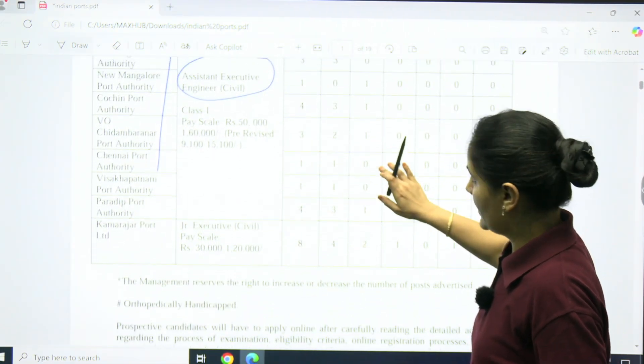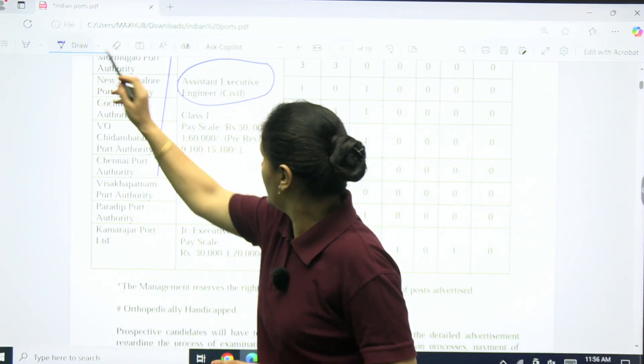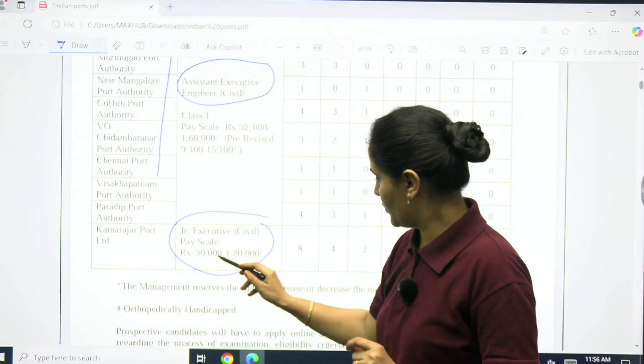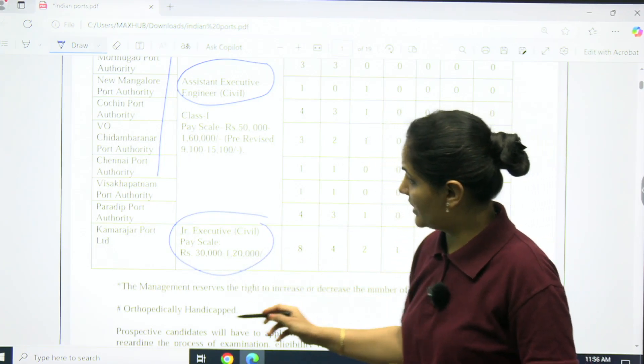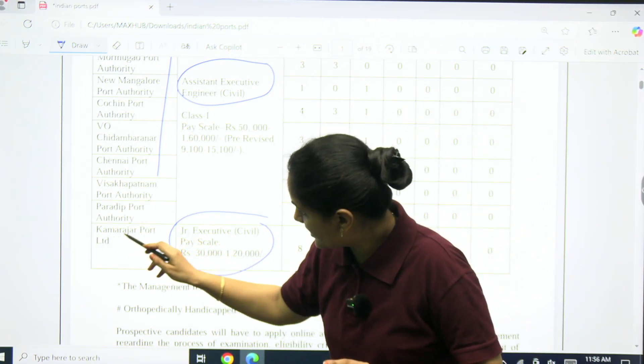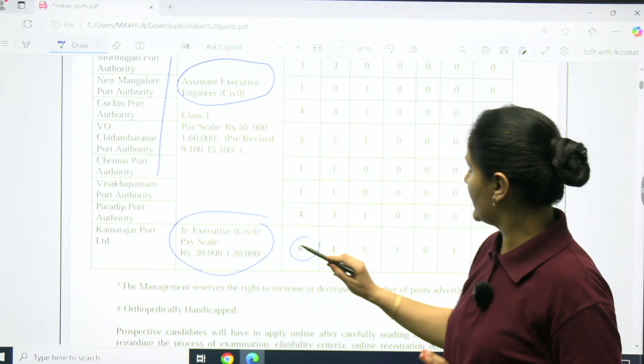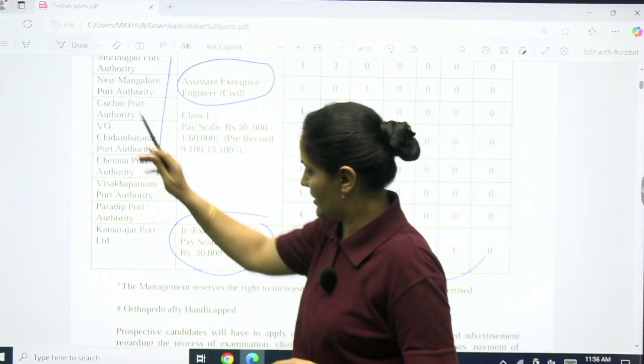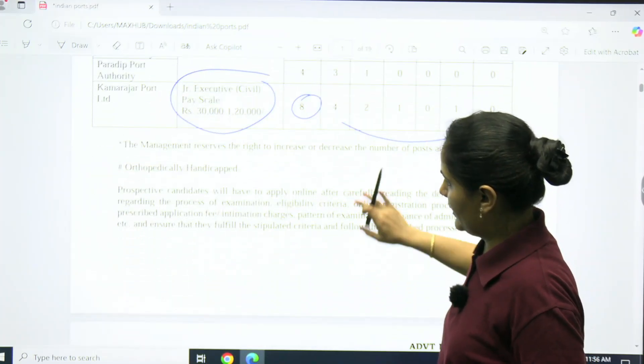The second one is Junior Executive Civil, pay scale rupees 30,000 to 1 lakh 20,000. This is only for Kamarajar Port Limited, and number of vacancies are eight. They mention according to category wise for unreserved and EWS.